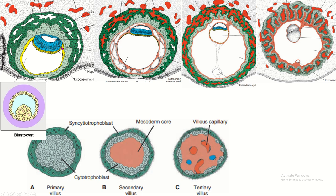The hypoblast continues as the exocoelomic membrane, which lines the inner portion of the cytotrophoblast. This membrane is converted into extra-embryonic mesoderm. Within the extra-embryonic mesoderm, some cavities develop, unite, and the mesoderm divides into two parts: one part runs with the hypoblast as the splanchnic layer, and one part lines the inner portion of the cytotrophoblast as the somatic layer.